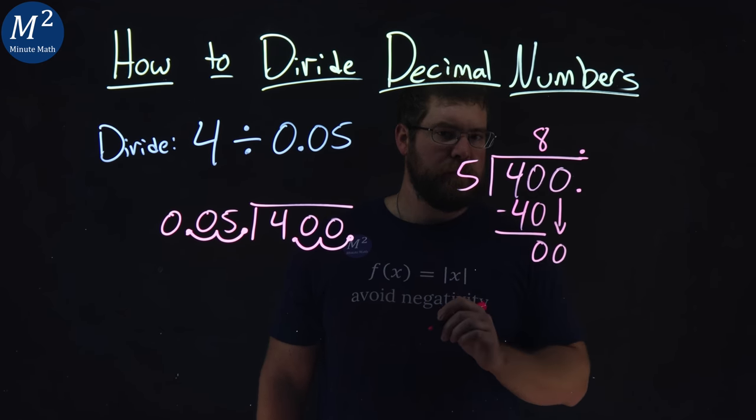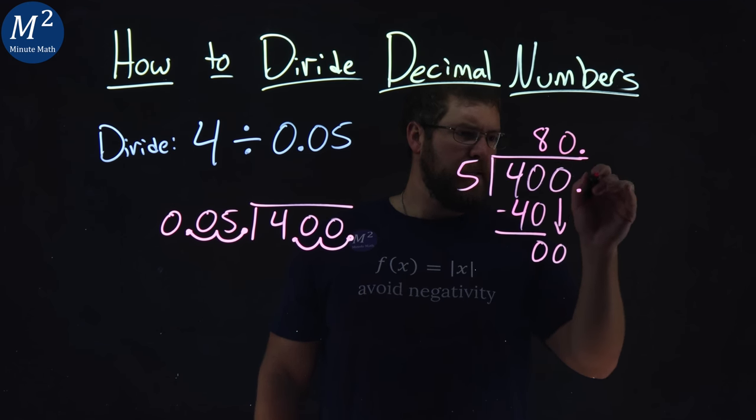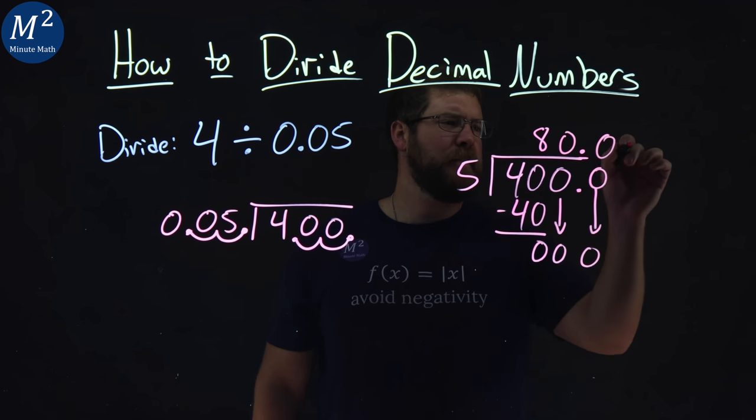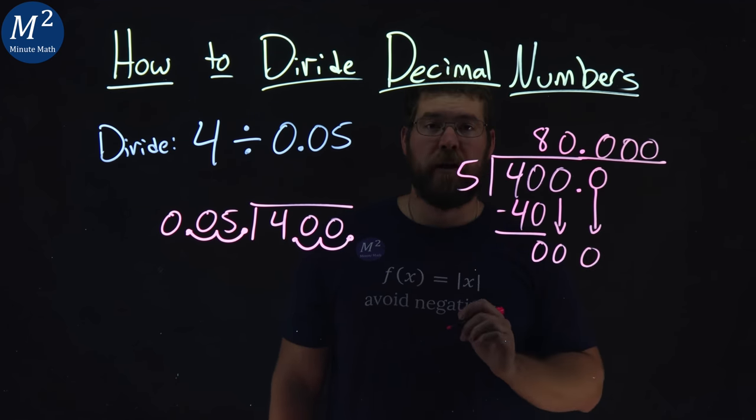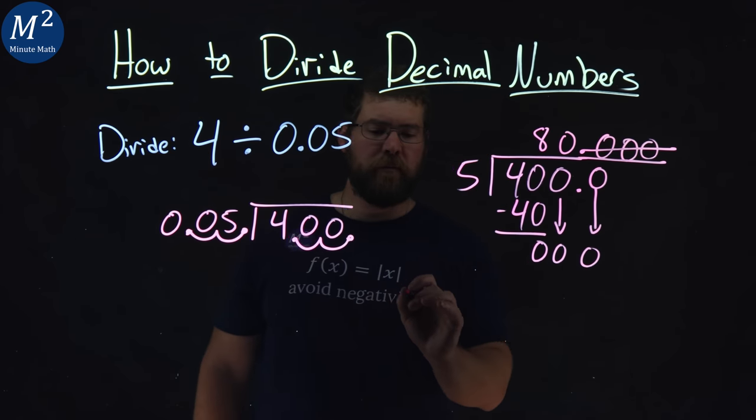Bring down the 0. Can 5 go into 0? No. 0. Same thing. Add a place value. 0. And notice what's going to happen. We just keep getting zeros from here on out. Well, we don't need those zeros there. And so we're left with just an 80.